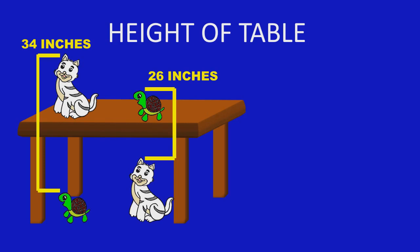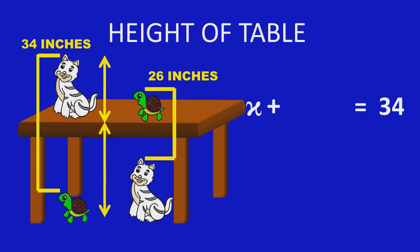So we are going to form two equations. 34 is equal to the height of the Cat, that is X, plus the height of the Table minus the height of the Turtle, that is Z minus Y. So X plus Z minus Y is equal to 34. This is the first equation.